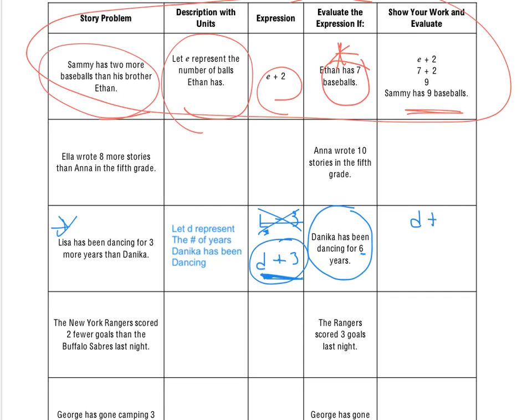So, there's my statement for the units, and I know that I can cross off this one right here because this is the one I'll be using because they've given us Danika. So, I'm using D plus three, and now I can substitute in for my variable, which is six, because that's the number of years Danika has been dancing. So, six plus three is nine. Now, all I need at the bottom is my quick answer statement that says, Lisa has been dancing for nine years.